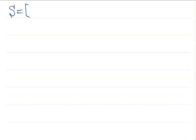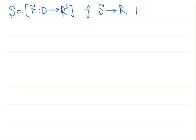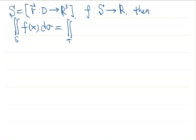We have introduced the concept of surface integral. Suppose S is a surface with parametrization R, which is a vector-valued function from two-dimensional D to three-dimensional space, and F is a continuous function on S. By definition, the surface integral of F over S is the double integral over D, substituting X — a point in S — by R(u,v).